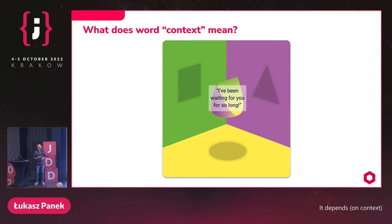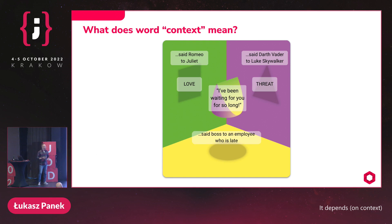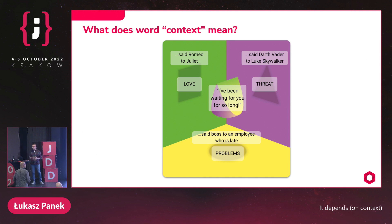Another example: the sentence 'I've been waiting for you for so long.' What does it mean? Again, it depends. If these are the words said by Romeo to Juliet, they mean love. However, if said by Darth Vader to Luke Skywalker, they mean threat — they are going to fight in a second. And if said by a boss to an employee who is late, they mean problems. So again, to understand the sentence, we needed to know the context. Sometimes we say a sentence was taken out of context — out of its surroundings — and that's why it was misinterpreted.